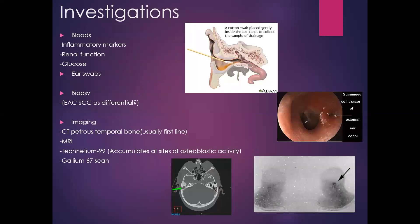In terms of investigations when considering NOE: for bloods, unlike acute otitis externa, you'll likely want to admit the patient. Send inflammatory markers — full blood count looking at white cells, CRP, and ESR as a longer-term marker of chronic inflammation. Check renal function as some antibiotics used to treat NOE can impact it. Also check glucose, with diabetes being one of the most common risk factors.